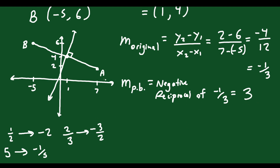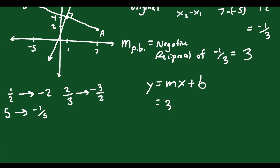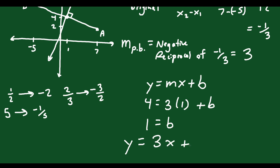Now that we know the slope of the new line is 3 and we have the midpoint (1, 4) on the line, we can find the equation using y = mx + b. Plugging in slope 3 and point (1, 4): 4 = 3(1) + b, so 4 − 3 = 1, meaning b = 1. Therefore the equation is y = 3x + 1. This equation represents the perpendicular bisector to line segment AB.